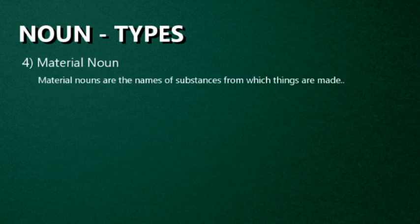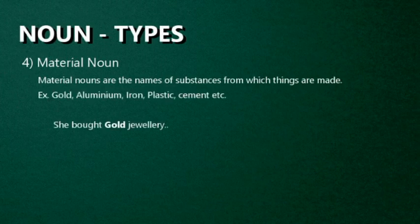Fourth one: Material Noun. The noun that gives the sense of a liquid or substance — that which is measured or weighed but not counted — from which various things are made is called a material noun. In other words, material nouns are the names of substances from which things are made. Examples: gold, aluminum, iron, plastic, cement. For example: She bought a gold jewel — here, gold is the material noun. It is a substance; we can measure it and weigh it, but we cannot count it.